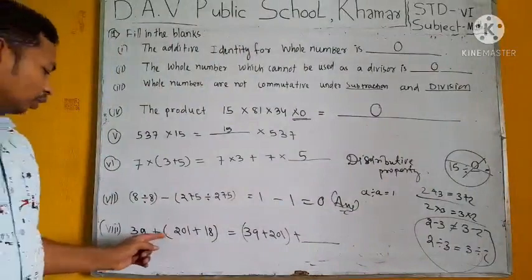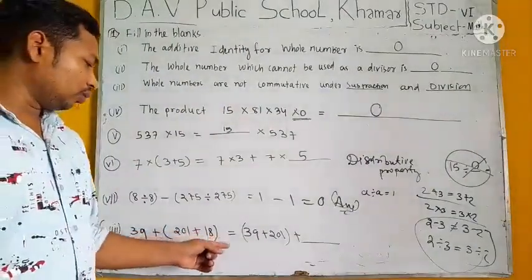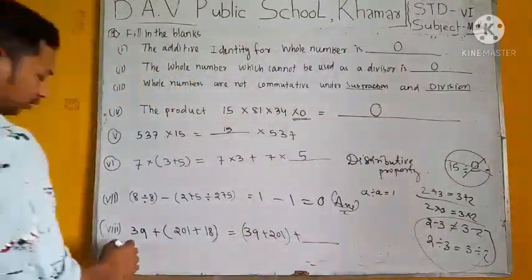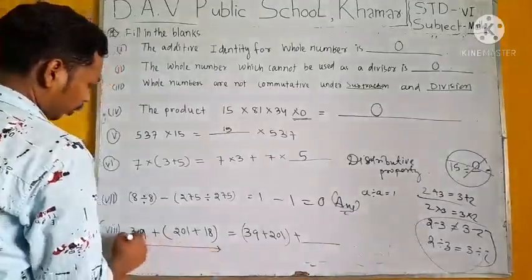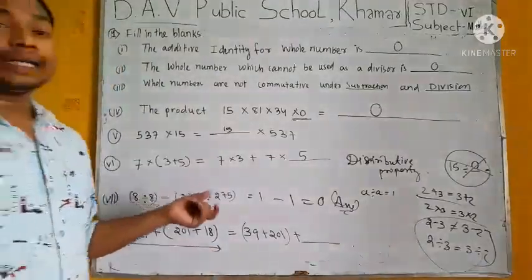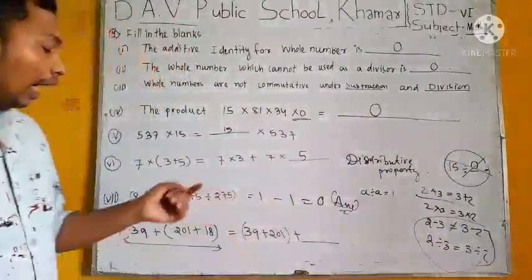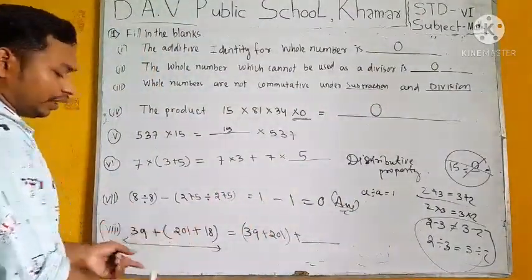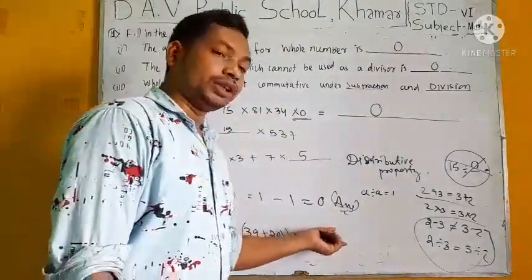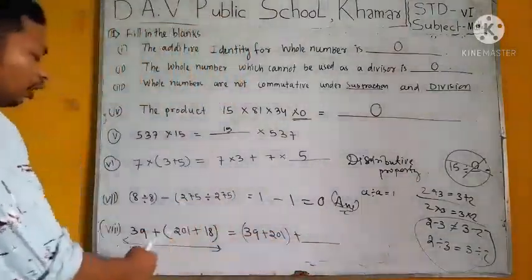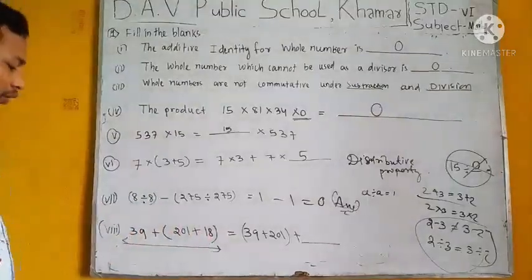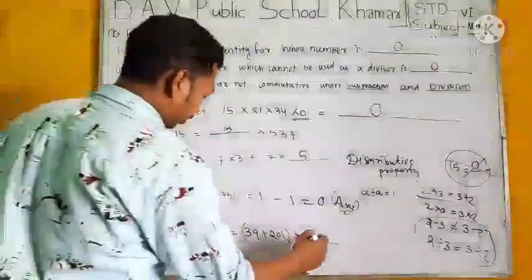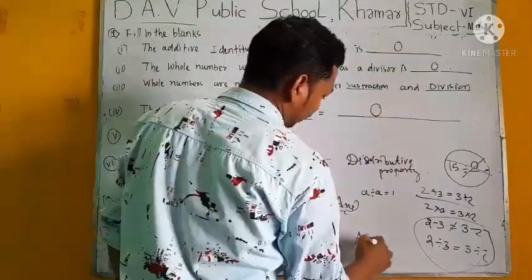Next question. 39 plus 201 plus 18 equal to 39 plus blank plus 18. We know that addition is associative. If we change the grouping, we get same result. That's why 39 plus 201 plus 18 equal to 39 plus 201 plus 18.